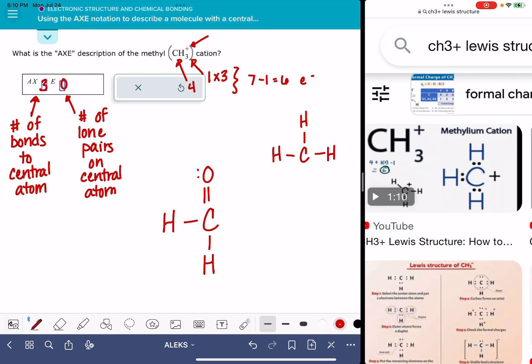Another thing that I want to point out is that E is representing the lone pairs on the central atom. So for this molecule, even though there are lone pairs on the oxygen, there are no lone pairs on the central atom, and that means that E is still zero.